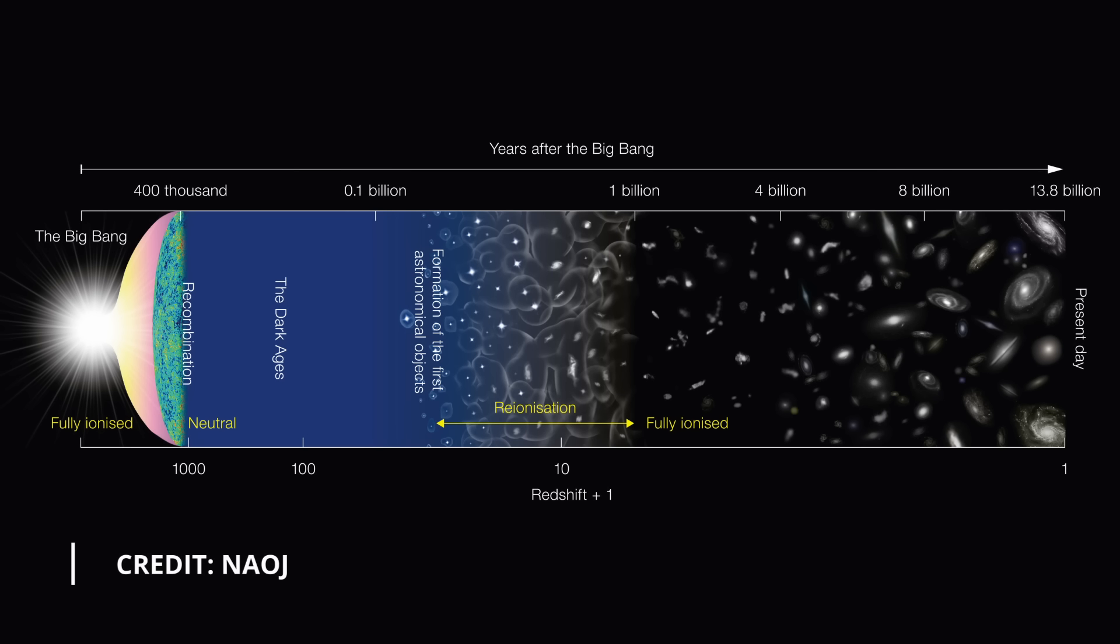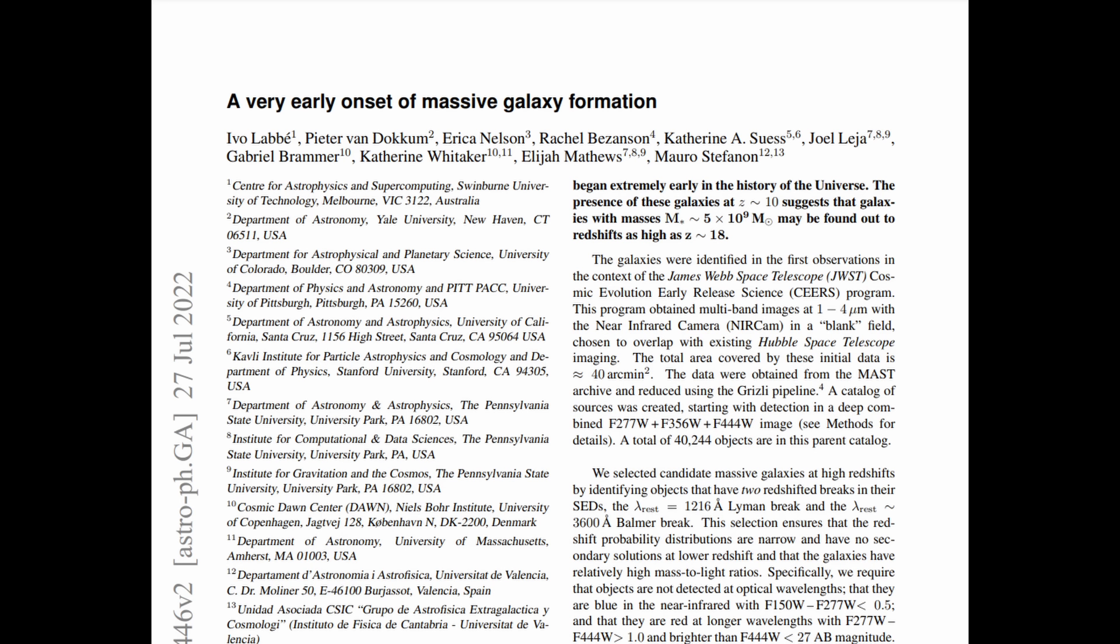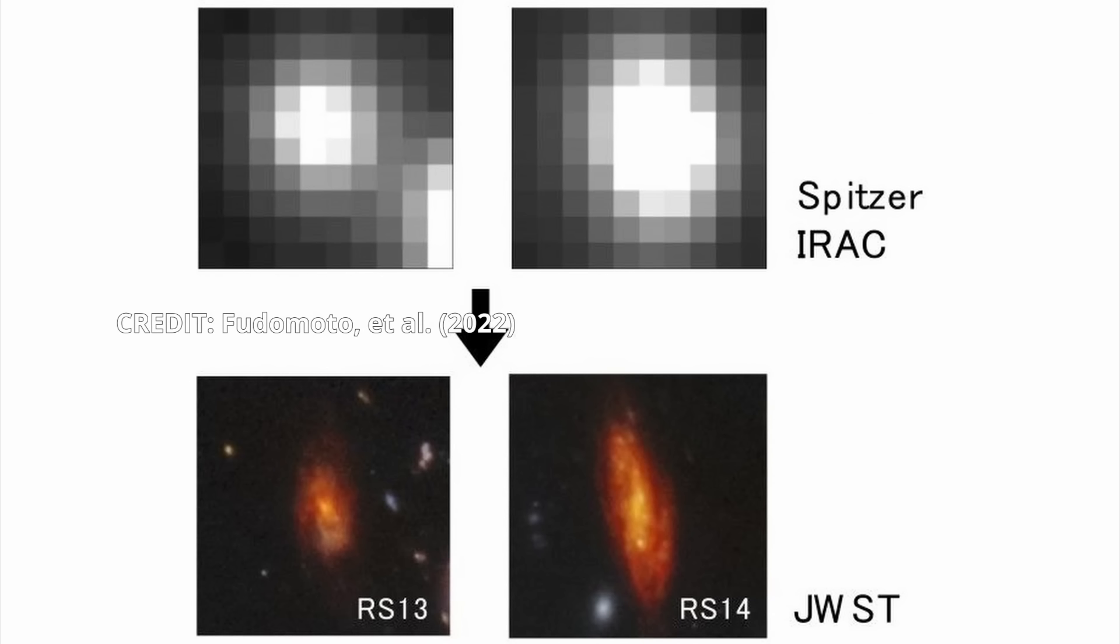For decades, the field of cosmology has been anchored by the belief that the universe is approximately 13.8 billion years old. However, recent observations from the Webb Telescope have challenged this notion, unveiling galaxies that appear surprisingly mature at the universe's infancy.